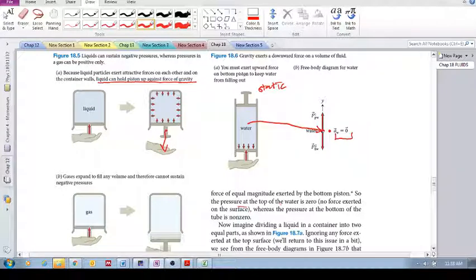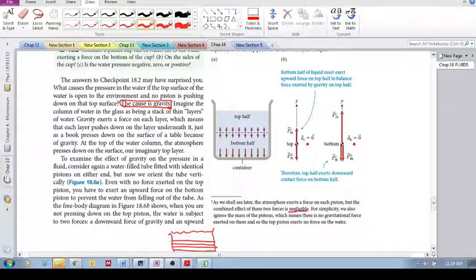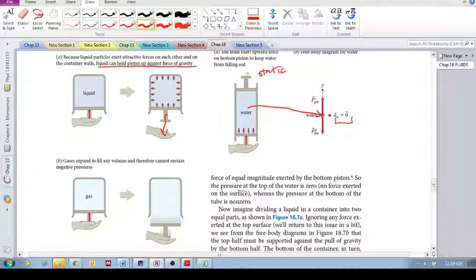So the pressure at the top over here is zero, because we just, our assumption, as we shall see later, the atmosphere at the top of that piston exerts a force on each piston, but the combined effect of these two forces is negligible. And for simplicity, we also ignore the mass of the pistons, which means that there is no gravitational force exerted on them, and so the top piston exerts no force on the water. So the assumption here is that there is negligible force acting down at the top, but the pressure at the bottom is non-zero. So the point is that there's a change in pressure between the top and the bottom.